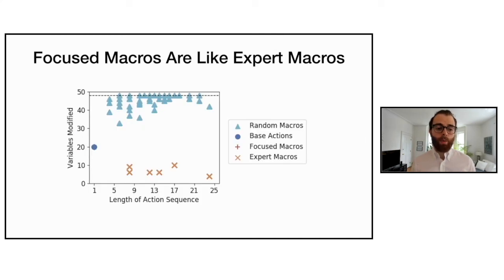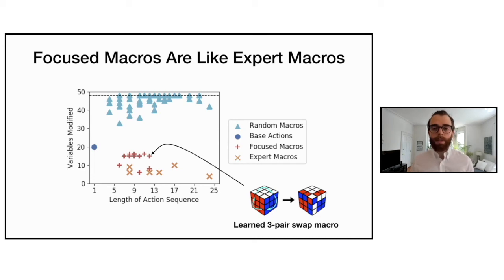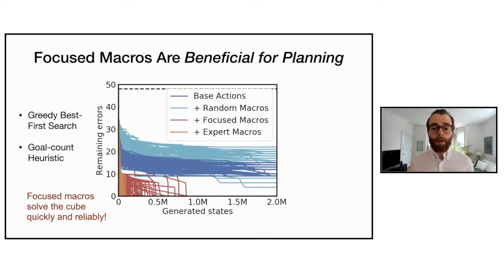Plotting the focused macro actions on the action plot, they are quite similar to the expert macro actions — modifying very few state variables — and have intuitive explanations. For example, a learned three-pair swap macro was discovered that resembles a skill a human might use in speed solving. Adding the focused macros to the base actions, the planner is able to solve the cube quickly and reliably in under a million states, which is really encouraging.